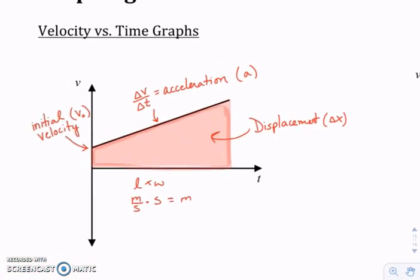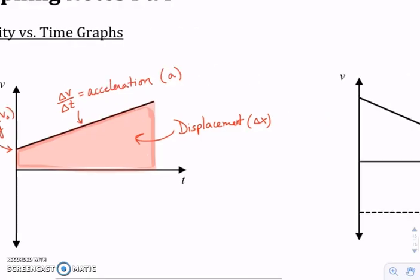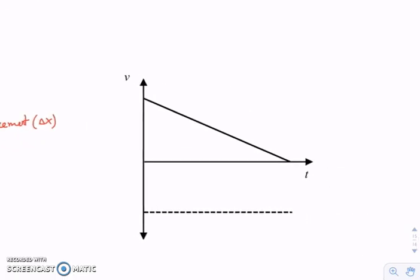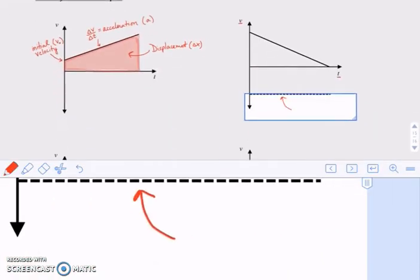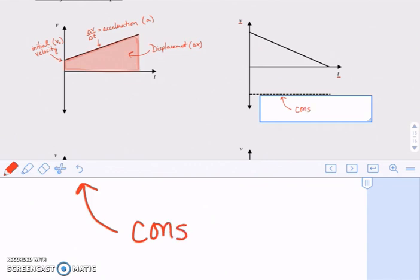So these are the big important parts of a velocity versus time graph. You have to know the meaning of the slope, the meaning of the y-intercept, and the area bound by the graph. Now let's talk about what these graphs actually mean. The horizontal line at the bottom indicates a constant velocity — the velocity is not changing.